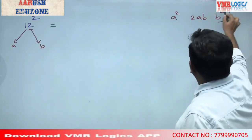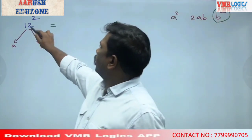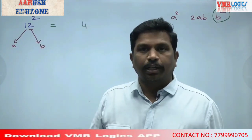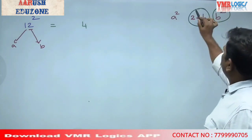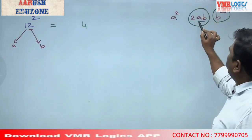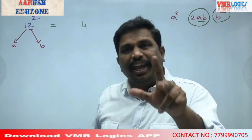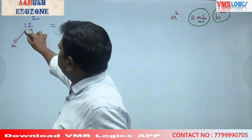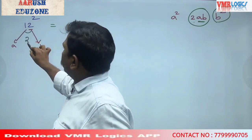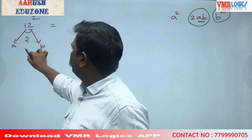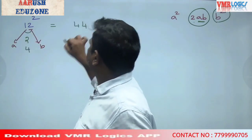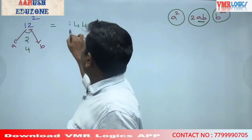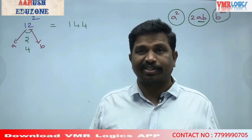First, B square: 2 squared = 4. Then 2AB: A into B = 1 into 2 = 2, double = 4. Then A square: 1 squared = 1. So the answer for 12 squared is 144.